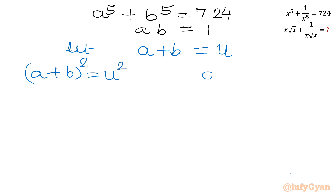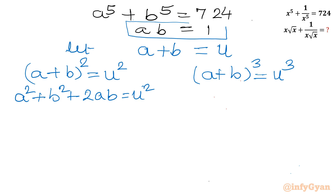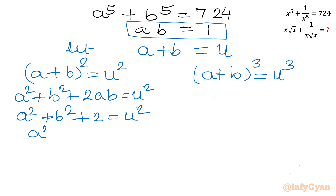Squaring: a² + b² + 2ab = u². Since ab = 1, this gives a² + b² + 2 = u², so a² + b² = u² − 2.